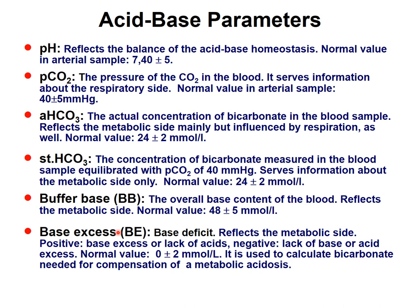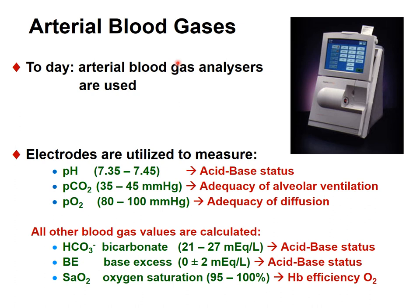Base excess was originally measured directly by giving acid or alkaline solution to blood to normalize pH. Today it's calculated as the difference between the measured and normal buffer base. Normal value is zero ± 2 mmol/L.